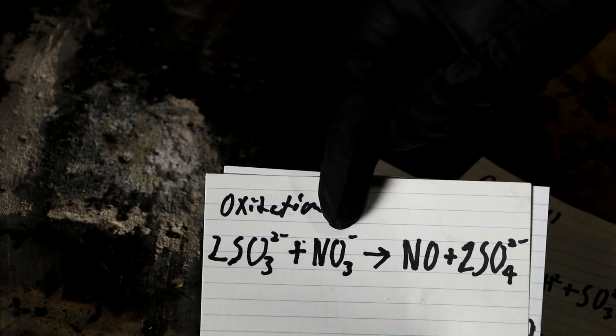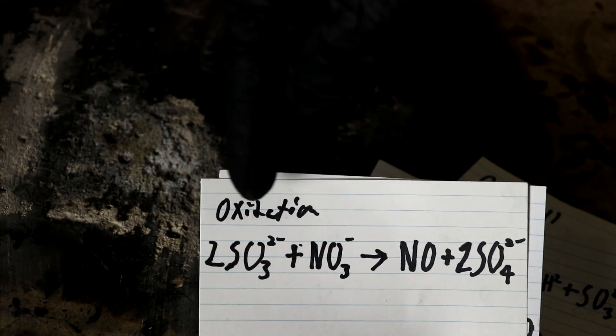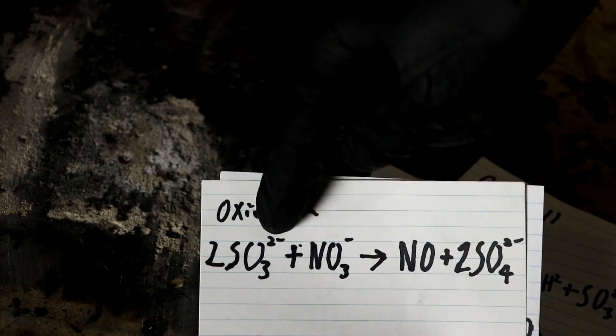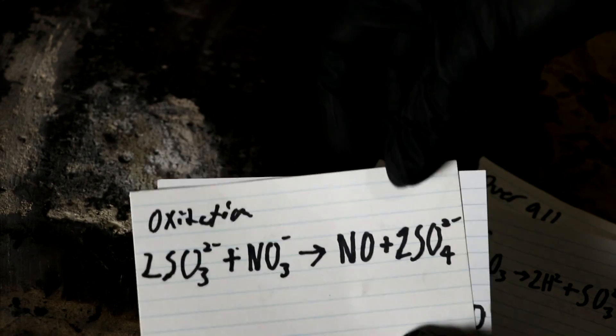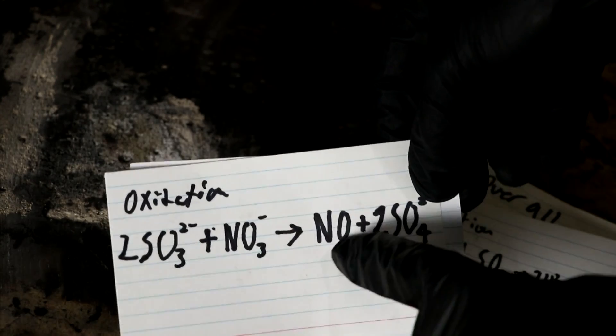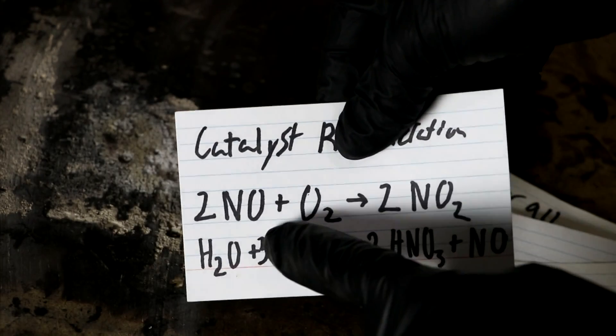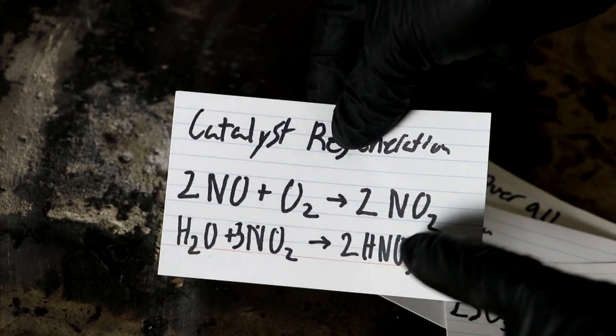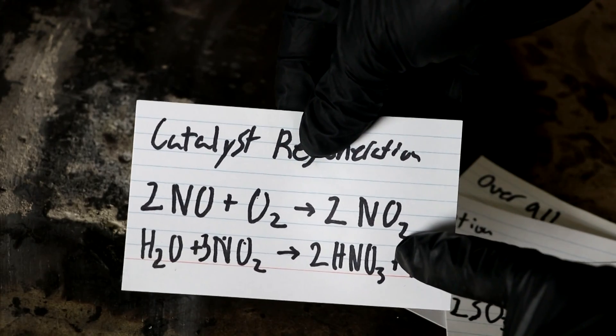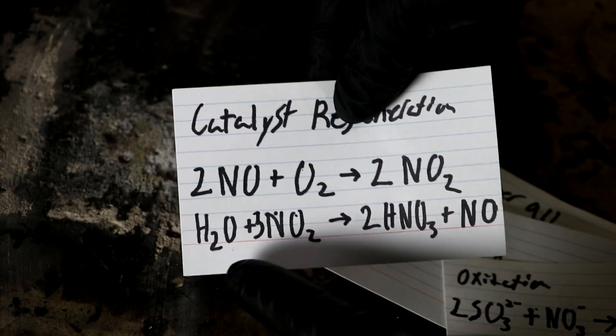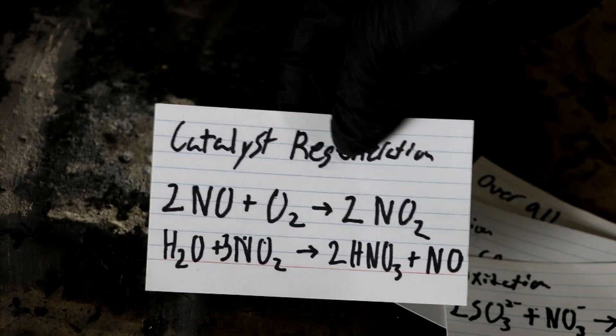And for this catalyst I'm going to be using nitric acid. So the nitrate reacts with the SO3 2- in solution forming sulfate and nitrogen monoxide gas. So nitrogen monoxide goes into the chamber and reacts with the oxygen gas forming nitrogen dioxide which further reacts with water forming nitric acid.